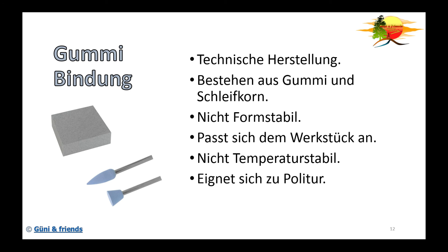Zur allerletzt kommen wir zur Gummibindung – auch technisch hergestellt, aus einer Mischung aus Gummi und Schleifkorn. Aus Gummi bedingt ist sie nicht formstabil, aber das ist auch positiv zu sehen: Sie passt sich dem Werkstück an und ist temperaturstuabil. Sie eignet sich für Polierstifte – kleine Schleifstifte, mit denen man wunderbar nachpolieren kann. Der Schleifgummi wird auch oft verwendet, um einen gleichmäßigen Strich auf Metall zu bringen, der aussieht wie gebürstet, aber eigentlich geschliffen ist. Praktisch auch, wenn man ein rostiges Messer hat – der Schleifgummi passt sich der Klinge an, auch wenn sie krumm ist, und man kann flächig den Rost abtragen.